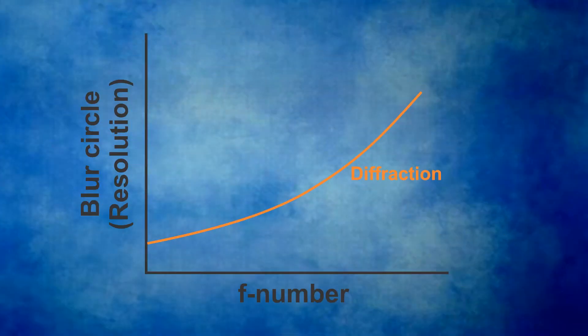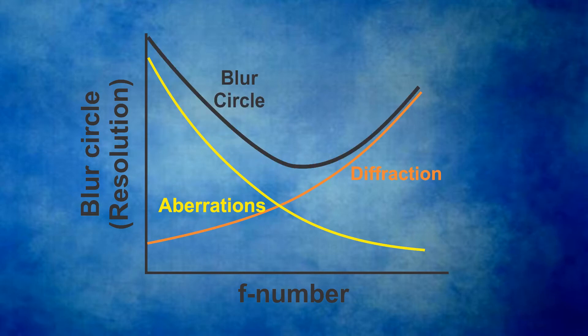The diffraction limit of a lens improves as the f-number gets smaller. The effects of aberration increase as the lens gets larger or the f-number gets smaller. At large f-numbers diffraction limits the resolution, while at small f-numbers aberrations limit the resolution. At some f-number the lens will produce its best resolution. Unfortunately, lens specifications do not normally give us this optimum f-number.